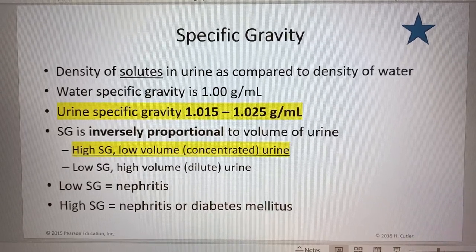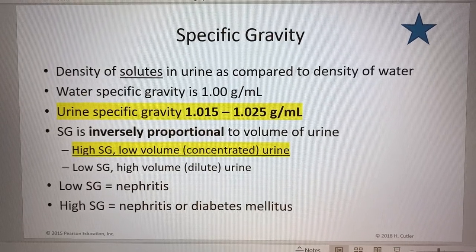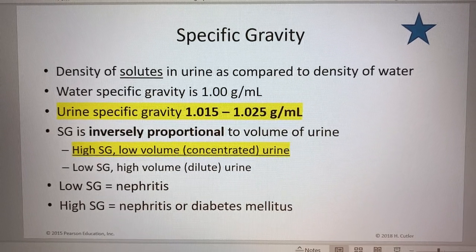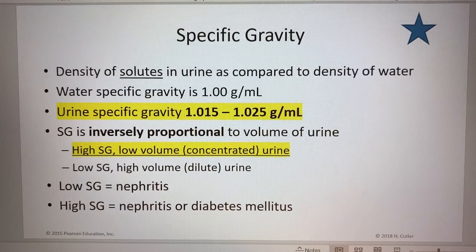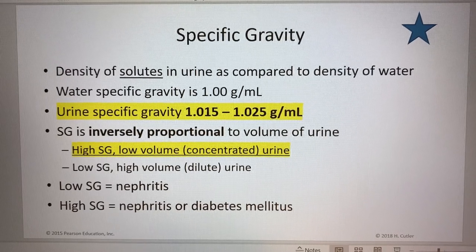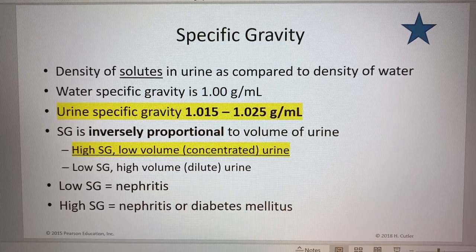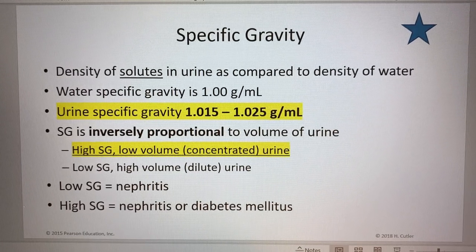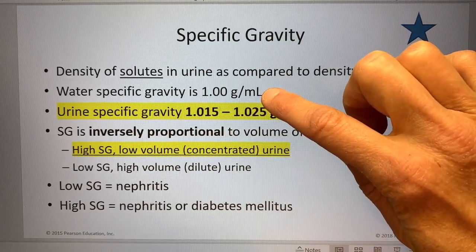We are not testing the specific gravity of these urine samples. However, we need to know that specific gravity is just how many solutes are present — what is the concentration of solute in the urine compared to the density of water. Water's specific gravity is 1.0 grams per milliliter, and urine specific gravity is usually 1.015 to 1.025 grams per milliliter. So urine is a little denser, meaning it has more stuff in it compared to water.